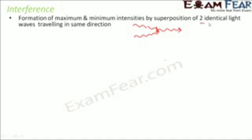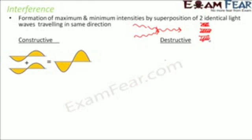A pattern of alternate dark and bright bands is seen on the screen. Young's double slit experiment is all about showing this alternate bright and dark bands pattern on the screen. Now, when we talk about interference there are two types: constructive interference and destructive interference. In constructive interference, when two waves are in the same phase, the intensity of the resultant wave is maximum.